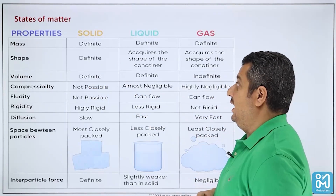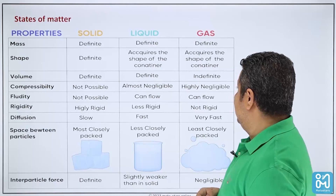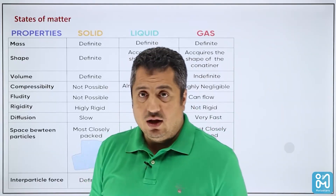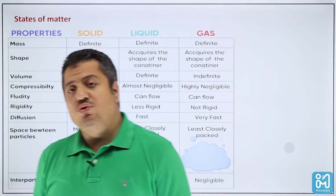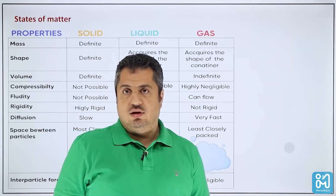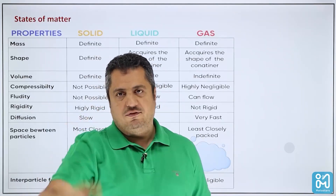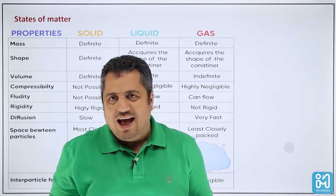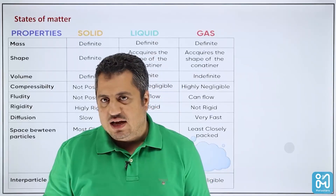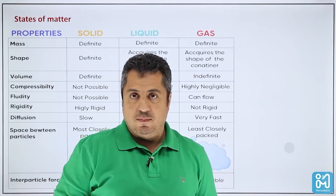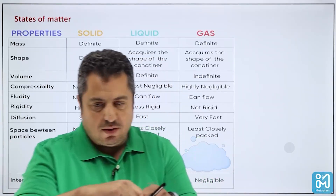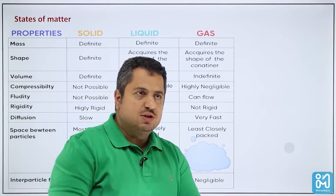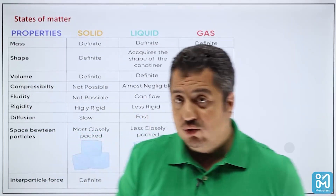For gas, of course, we can compress it. A good example is a lighter — the fuel inside it is actually a gas that has been compressed into liquid. Just remove the cap and you will see the whole liquid spread as a gas through the whole room.